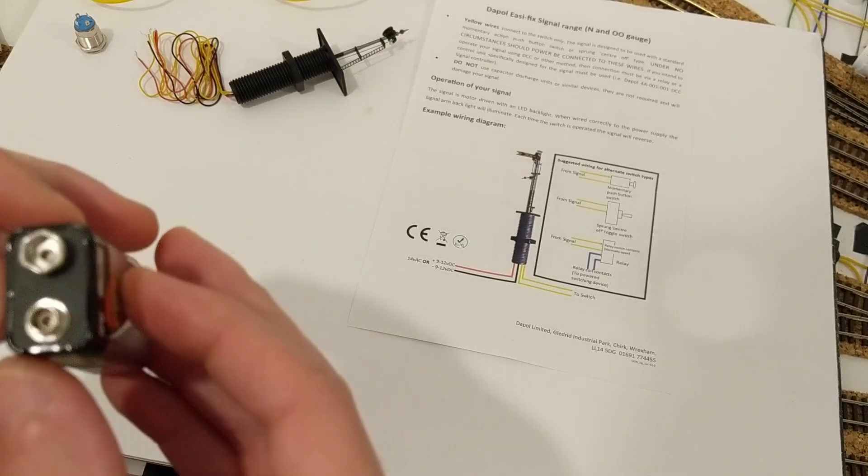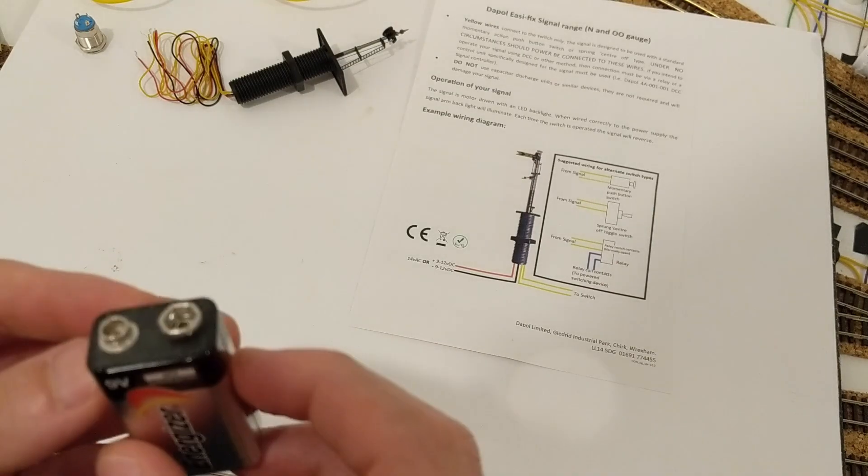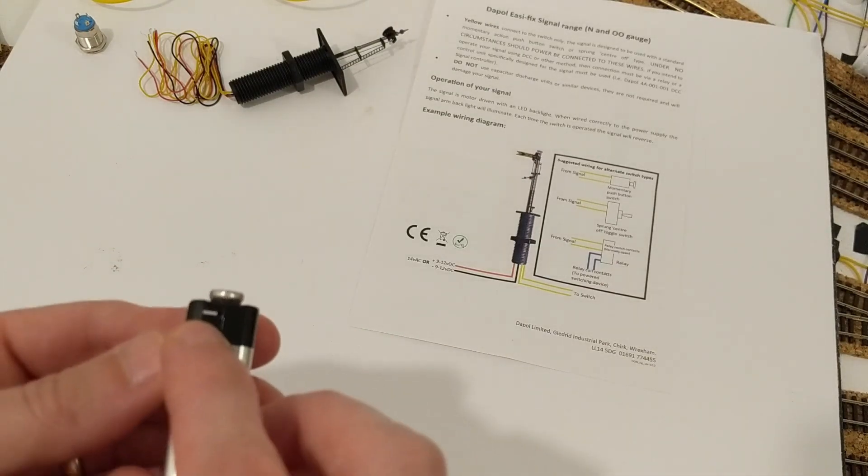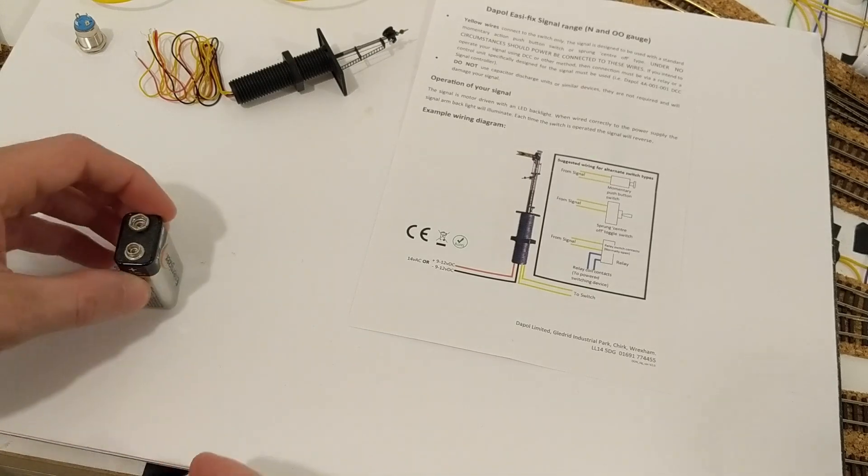It can also be powered by AC, which means that it must be able to rectify the current, but the instructions say that red is positive and black is negative, and that correct connection is essential, so I decided not to experiment with doing it the other way around.